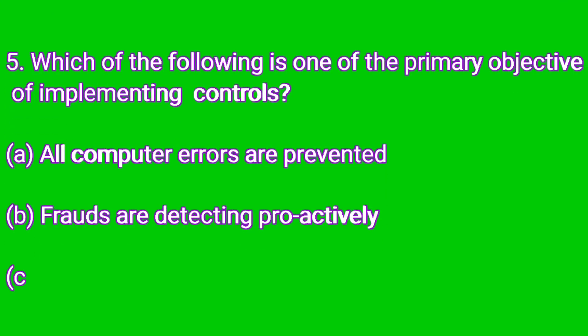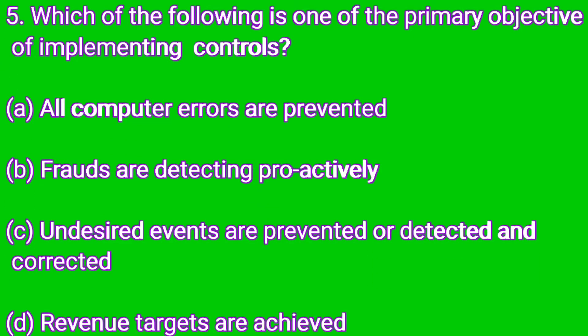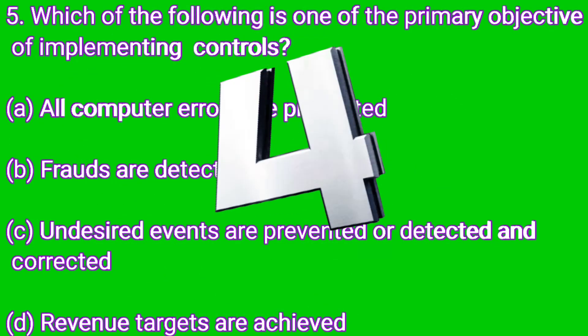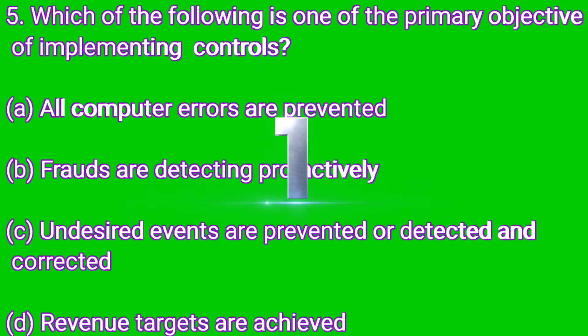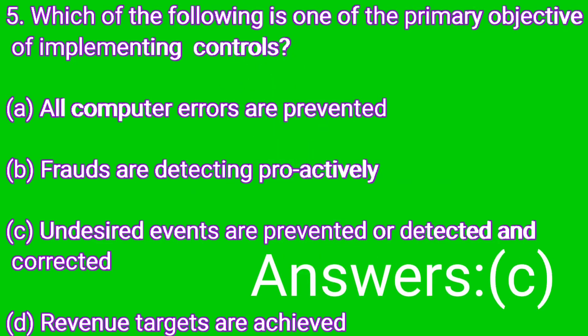Question number five: which of the following is one of the primary objectives of implementing control? The answer is C — undesired events are prevented or detected and corrected is one of the primary objectives of implementing control. The right answer is C.